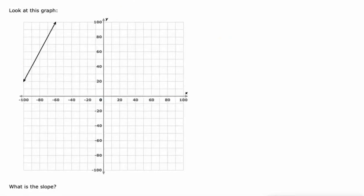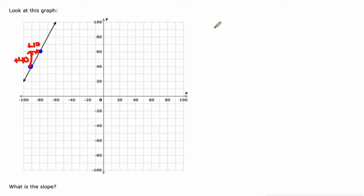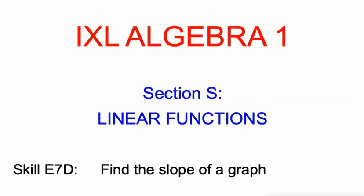And one last one here. Can't see where it crosses either axis, but that doesn't really matter. So I might identify that point and that point. Let's look at this change from 40 to 60 — that's an increase of 40 — and from negative 90 to negative 80, that's an increase of 10. So our change in Y is 40, divided by our change in X, 10. And 40 divided by 10 is 4. It doesn't have to be a fraction; it can come out as an integer, but we do always want to simplify. So in this case, the slope is 4. That's how you find the slope of a graph.